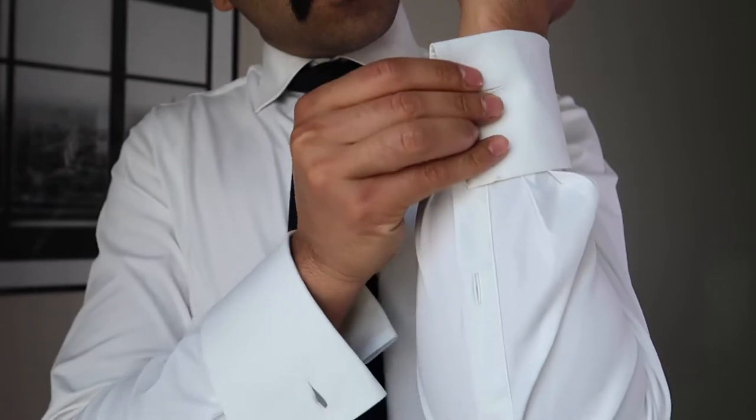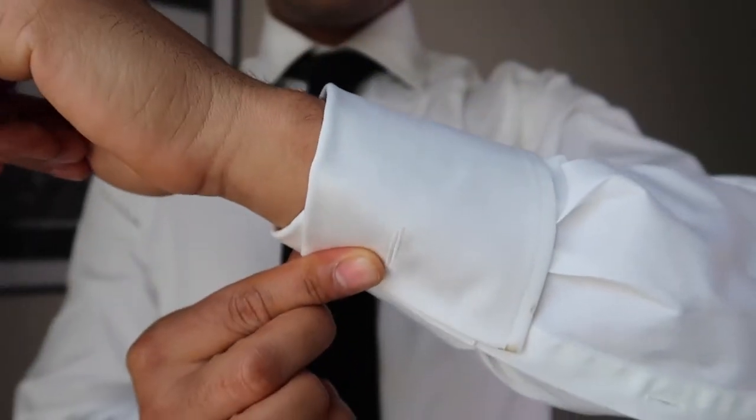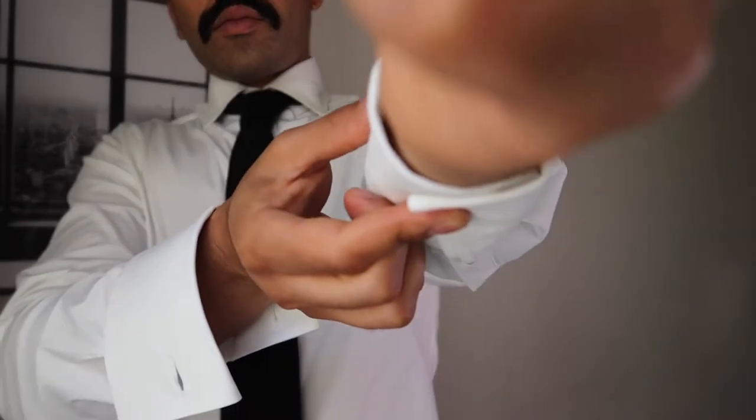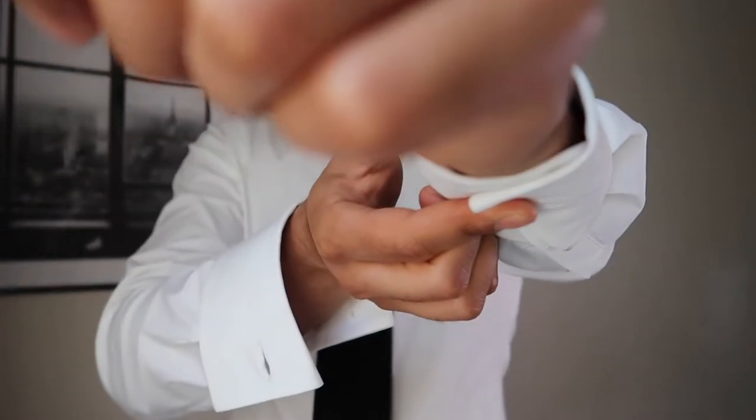The second way to wear cufflinks is barrel style. This time you will roll your cuffs inward, match the holes, and link the cuffs.